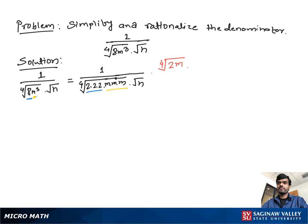So what to do? Multiply both numerator and denominator by the fourth root of 2m. And to remove the square root n, we need 1 more n, so we multiply both numerator and denominator by square root n.